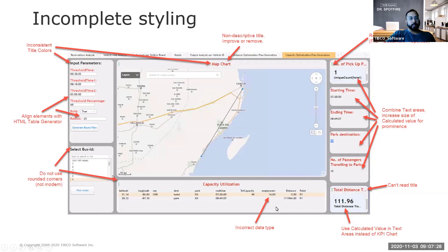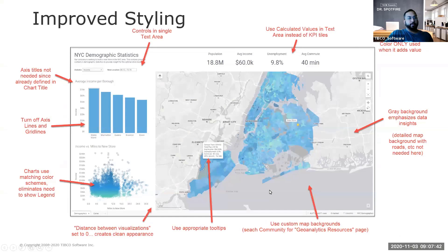Another key thing is using the correct chart type. This example uses flight data showing the number of empty seats, but it's not using the correct data type — there are decimals showing where they shouldn't be. So that's an example of some of these issues that need to be cleaned up.